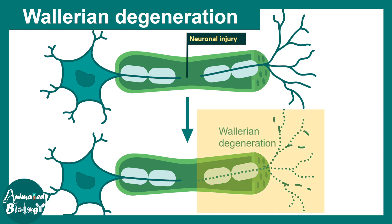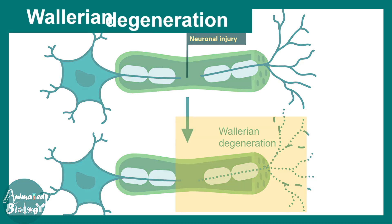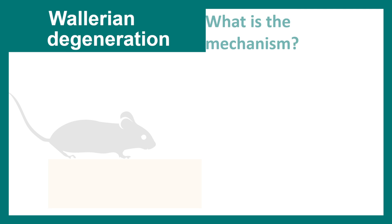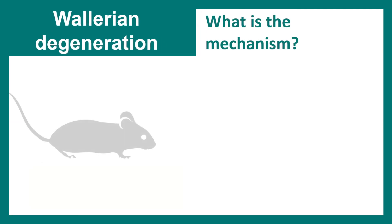Any injury or disintegration of nerve fibers at the distal site of the injury site constitutes Wallerian degeneration. So the question is, what really happens in Wallerian degeneration? How are these axons disintegrating? What goes wrong? Is it simply programmed cell death, or is it different from programmed cell death?